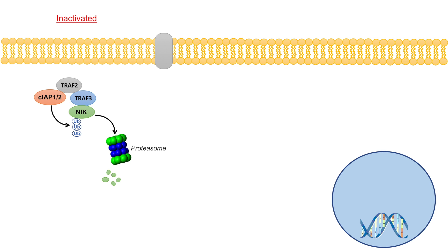What is the purpose of NIK? To answer that, we have to look at something else. There is a protein dimer within the cell consisting of P100 and REL-B. This dimer is considered inactive. When NIK levels are low within the cell, this dimer remains in its inactive P100-REL-B form.